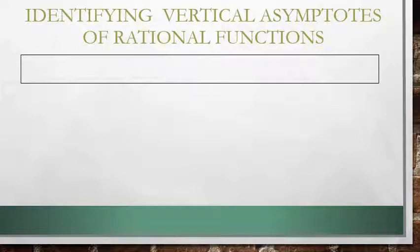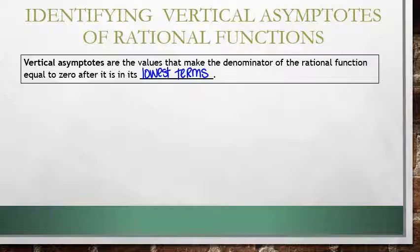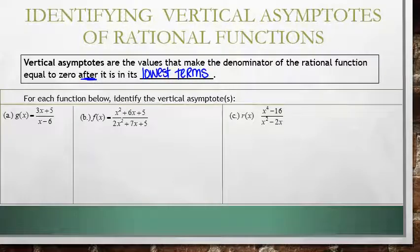For identifying vertical asymptotes of rational functions, the vertical asymptotes are the values that make the denominator equal to zero after the function is in its lowest terms. That means we've factored the numerator and denominator and canceled out any like factors, simplifying as much as possible. The key thing is that vertical asymptotes are found after you've simplified the rational function.